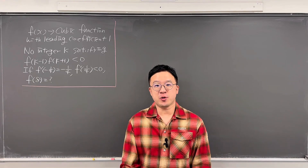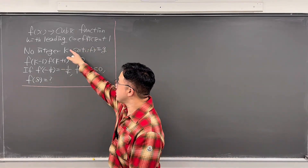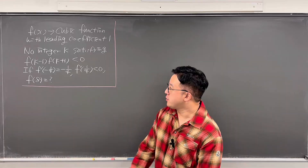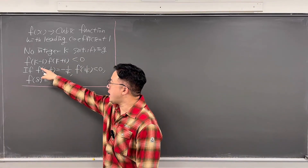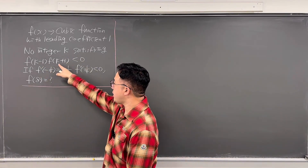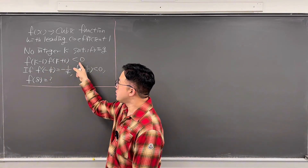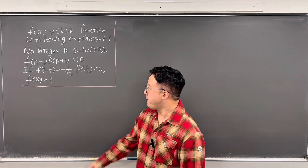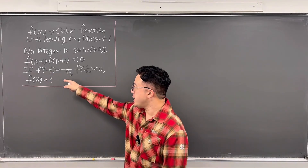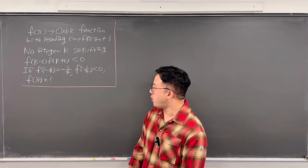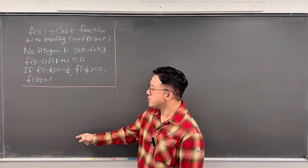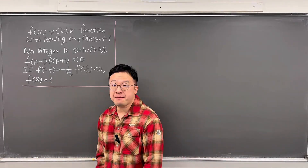Okay, here's the question. f of x is a cubic function with leading coefficient of 1. There's no integer k satisfying f(k-1) times f(k+1) less than 0. And if f'(-1/4) = -1/4 and f'(1/4) is negative, what's the value of f(8)?